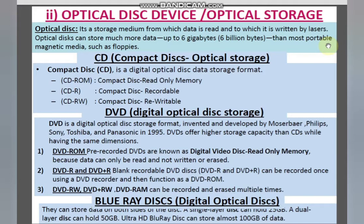CD-RW is Compact Disc Rewritable. You can write, erase, and rewrite on it as many times as you like. You can read, write, erase, and edit repeatedly — so CD-RW gives you full read-write flexibility multiple times.